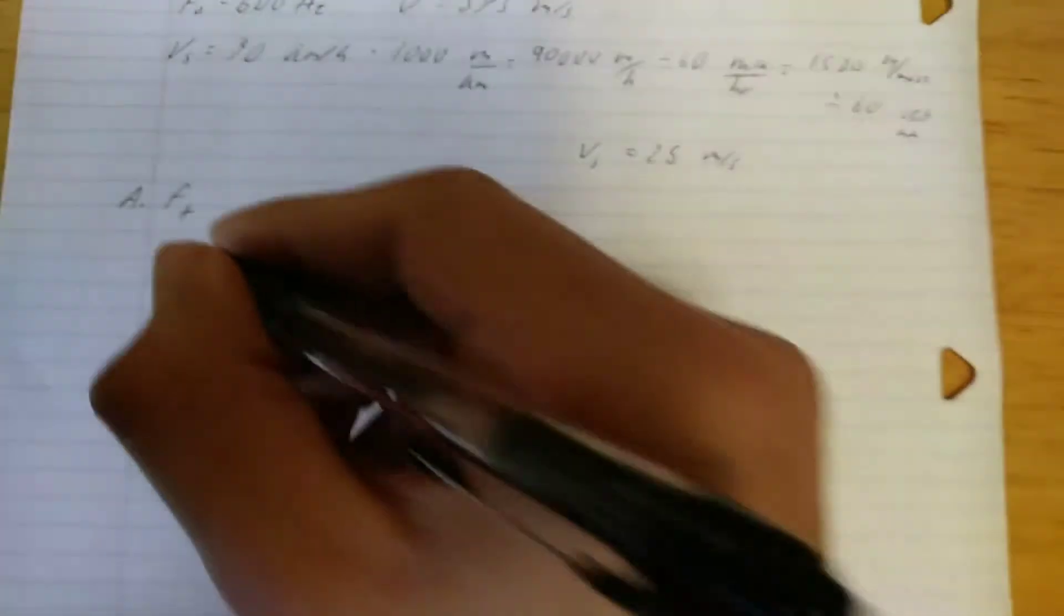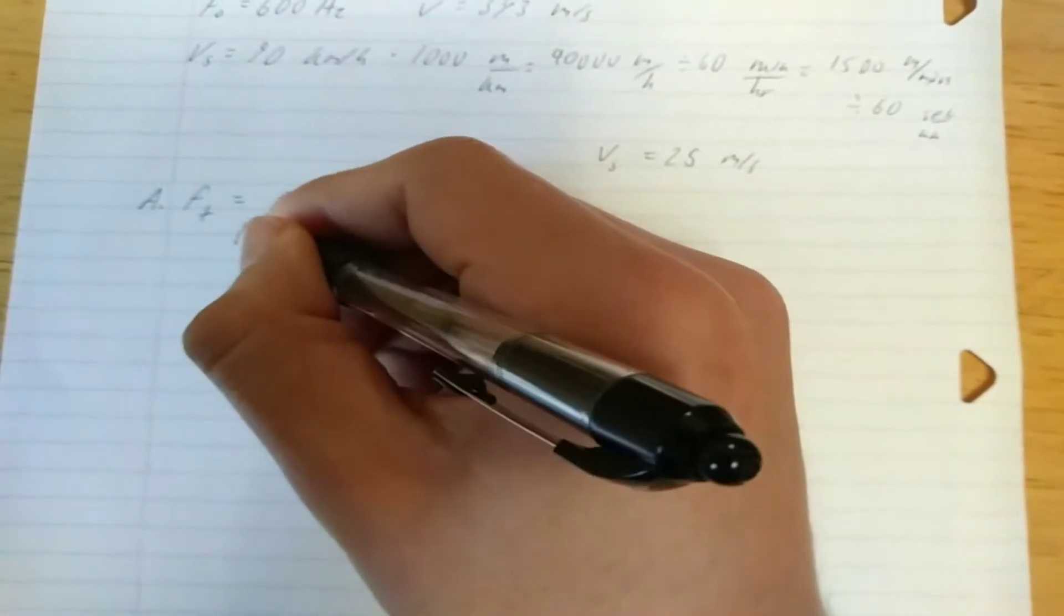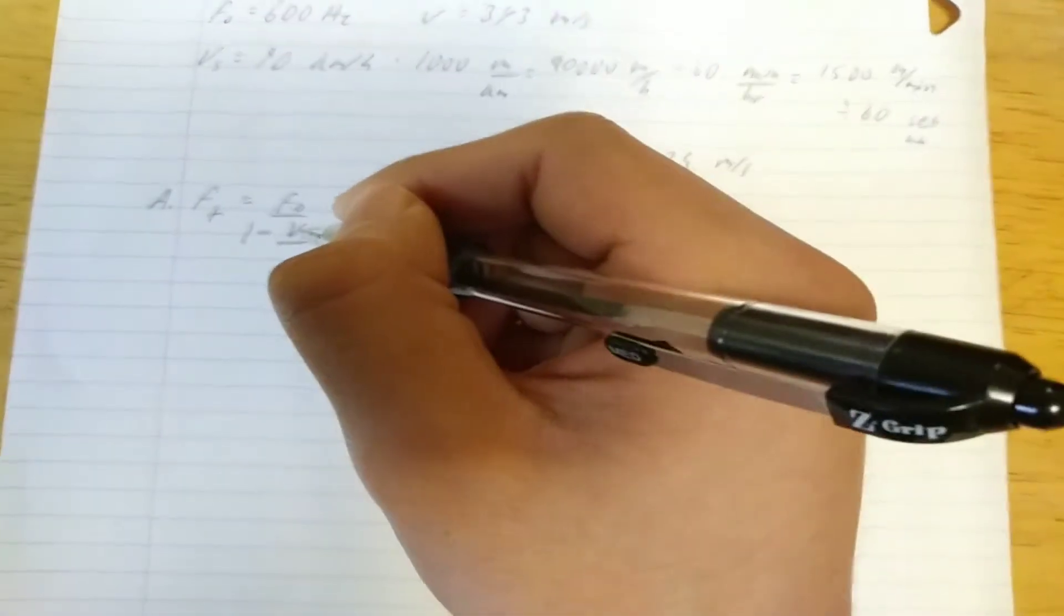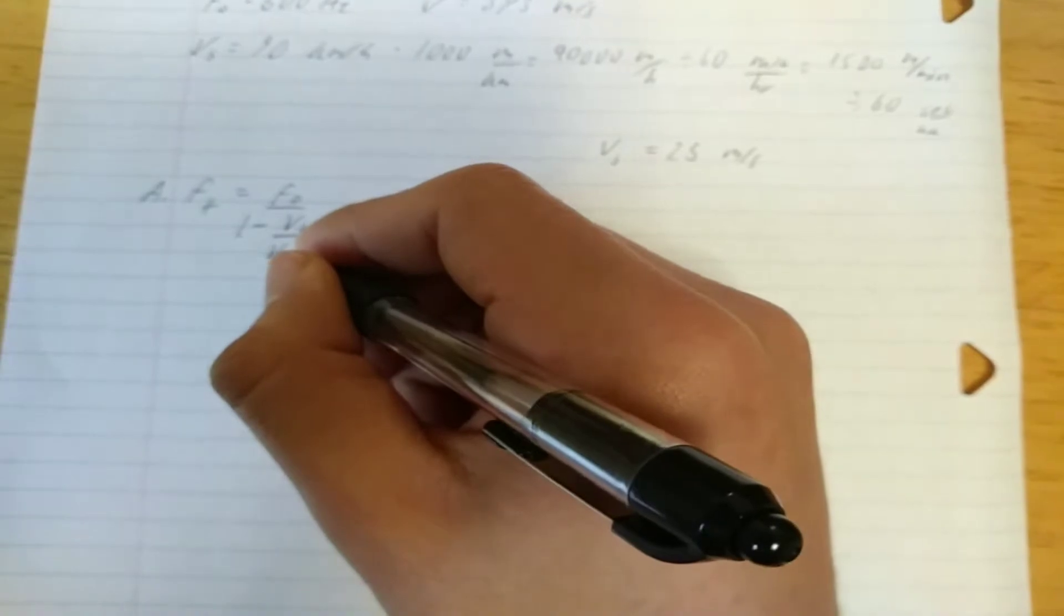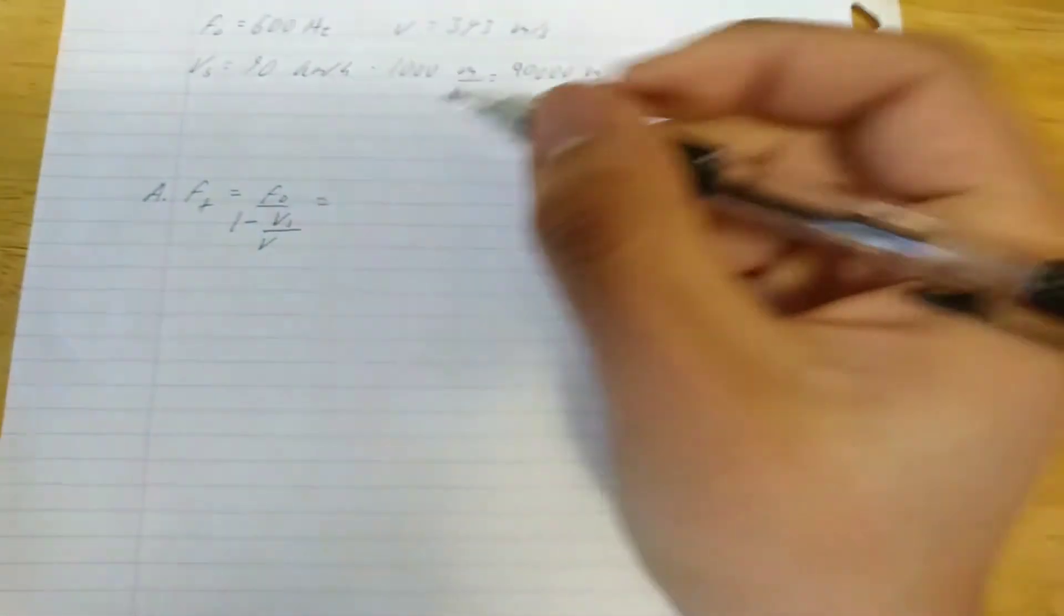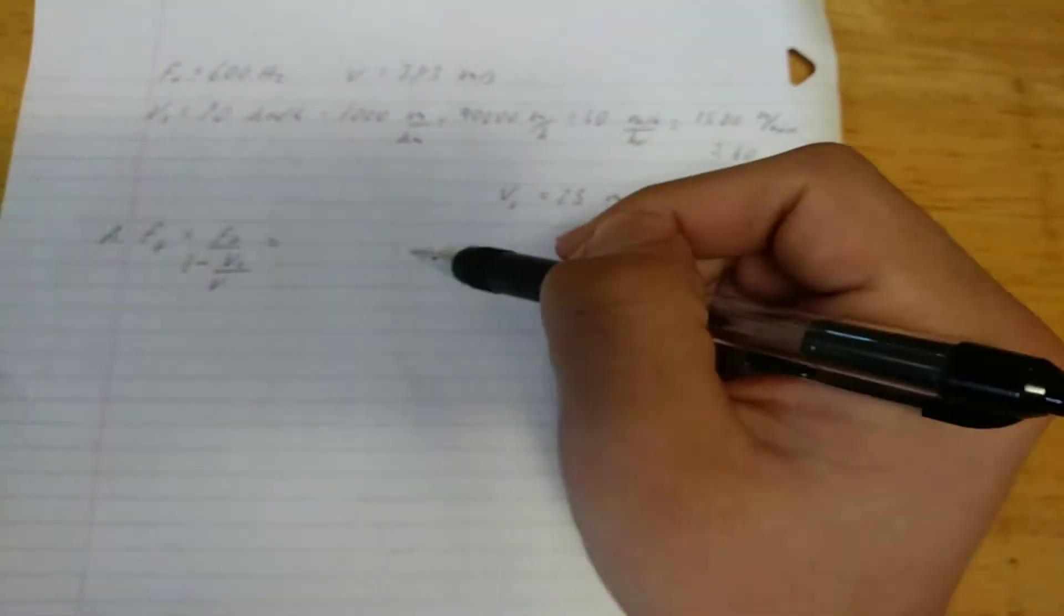So we denote this by saying the frequency heard by a person in front of the car, F sub plus, is equal to the initial frequency over 1 minus the velocity of the source divided by the velocity of sound in air. Now, since we have a formula, we just plug our known values into the formula.